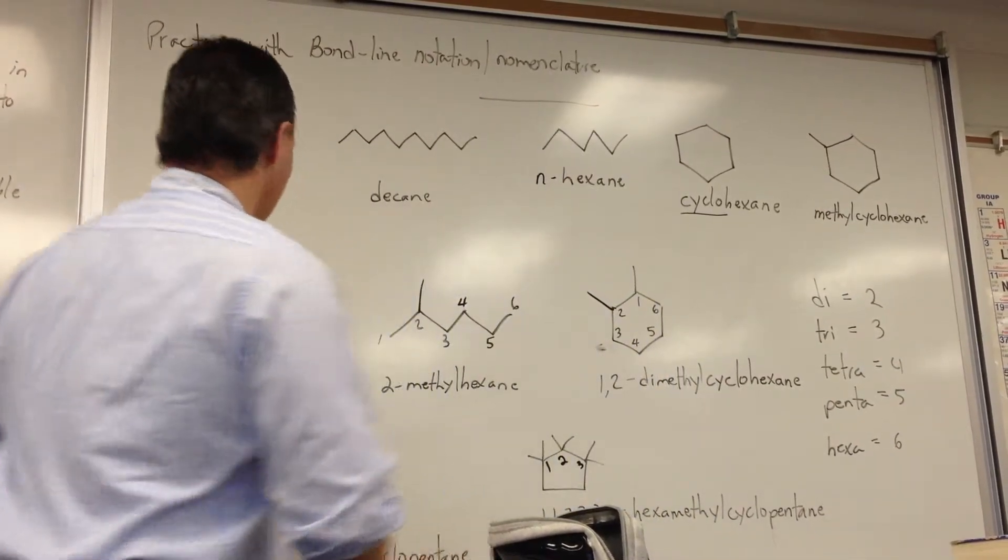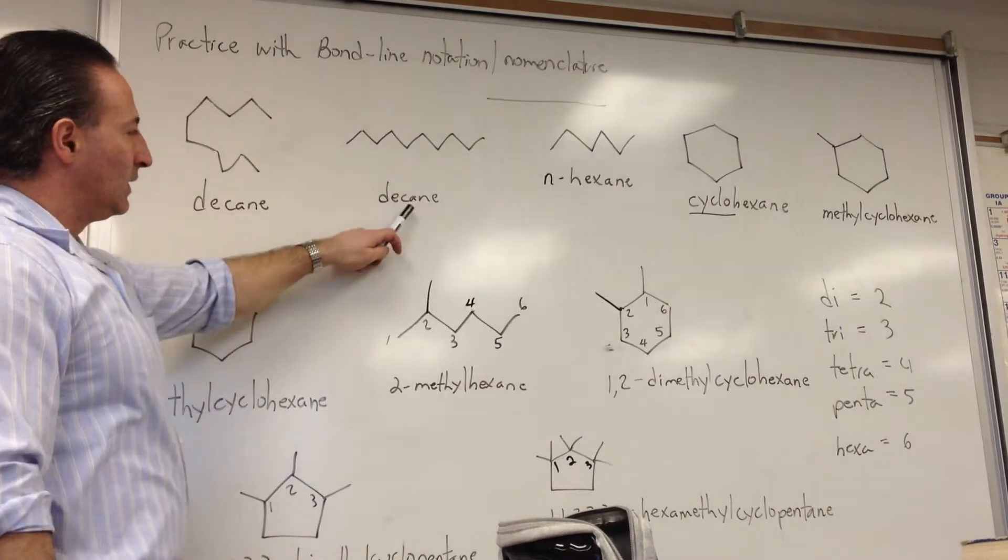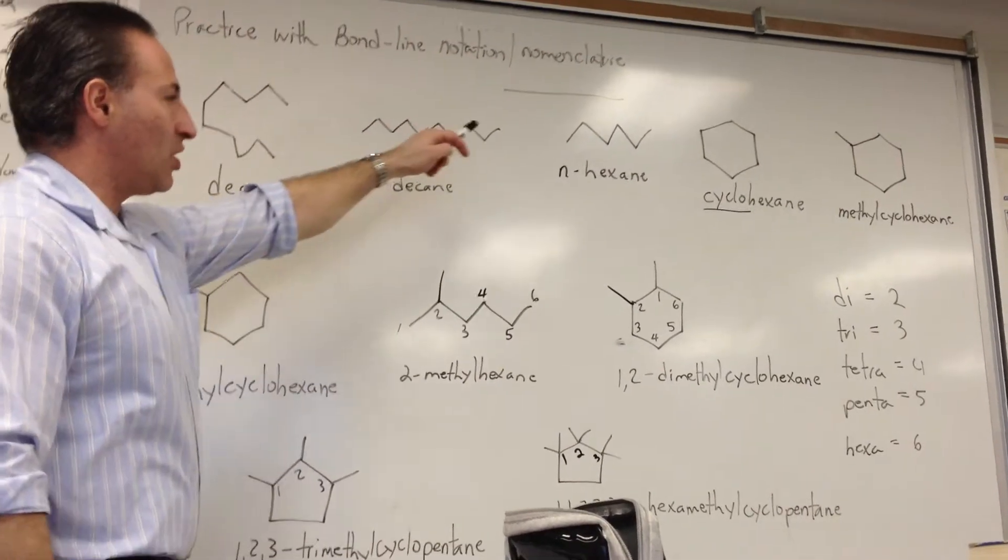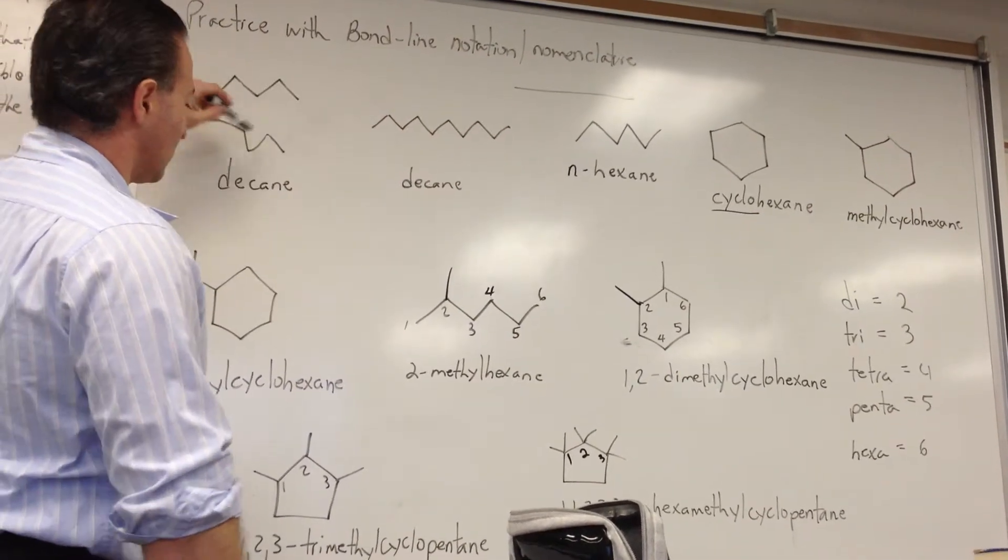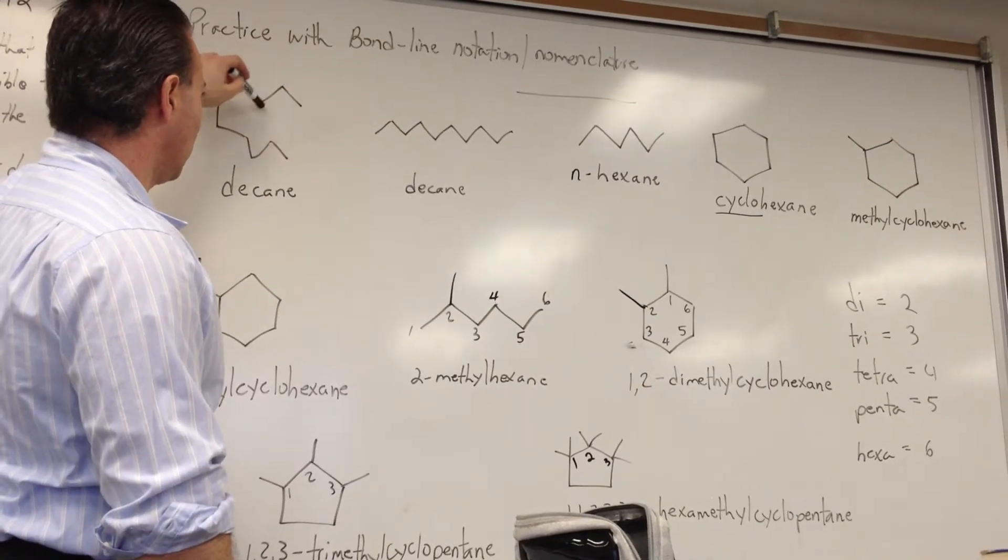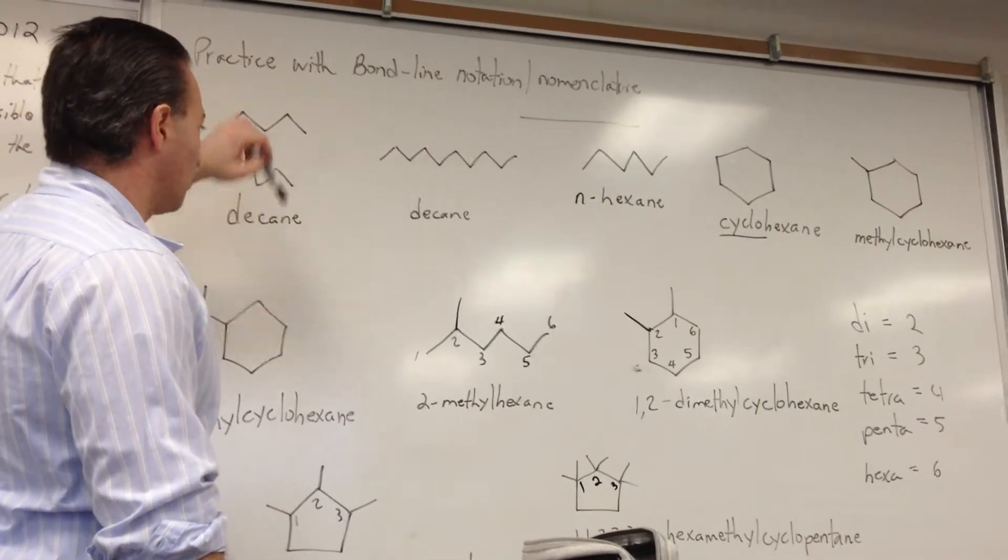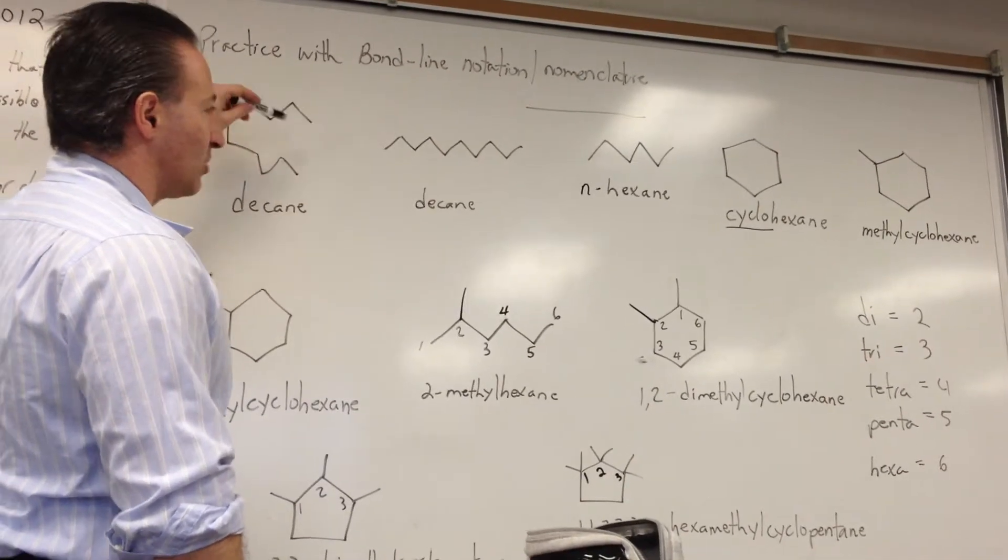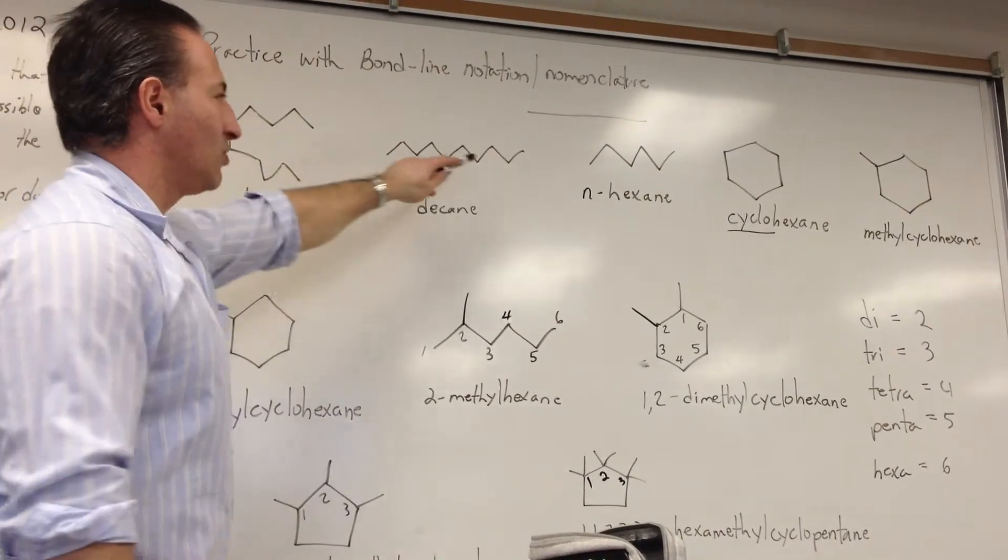We also observed that decane is normally drawn in a straight line, but it can be like this. The molecules, the bonds between carbon atoms are completely mobile, so the chain is completely floppy. But typically we'll draw it in a straight line.